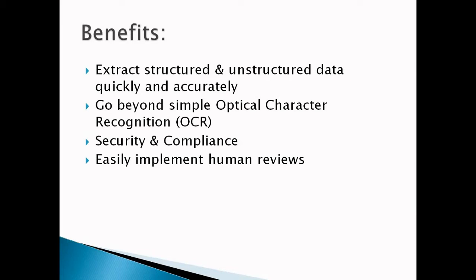Second is going beyond simple optical character recognition — OCR. Amazon Textract uses OCR technology to identify form labels and values and extract information from tables without compromising the structure, at a low cost. You pay for what you use, with no upfront commitments or long-term contracts.